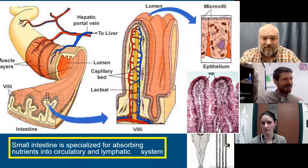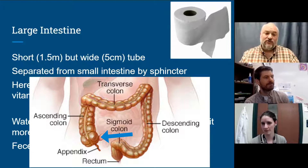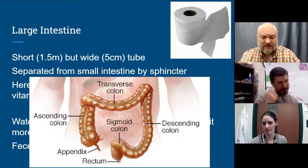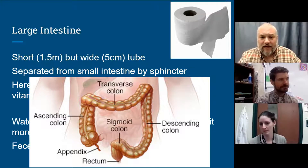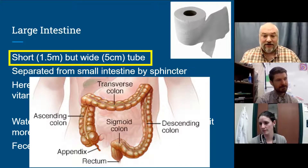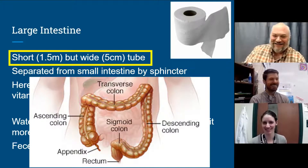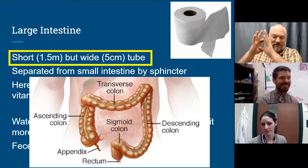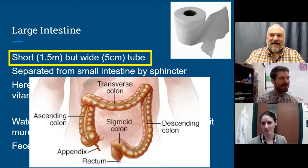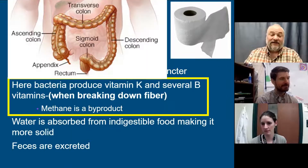The small intestine is specialized for absorbing nutrients into the circulatory and lymph systems. Now we leave the small intestine and head into the large intestine. At this point we've absorbed just about all the usable nutrients. The large intestine is shorter — about one and a half meters — but wider, about five centimeters in diameter. There's a sphincter between it and the small intestine so you can control when things go in.